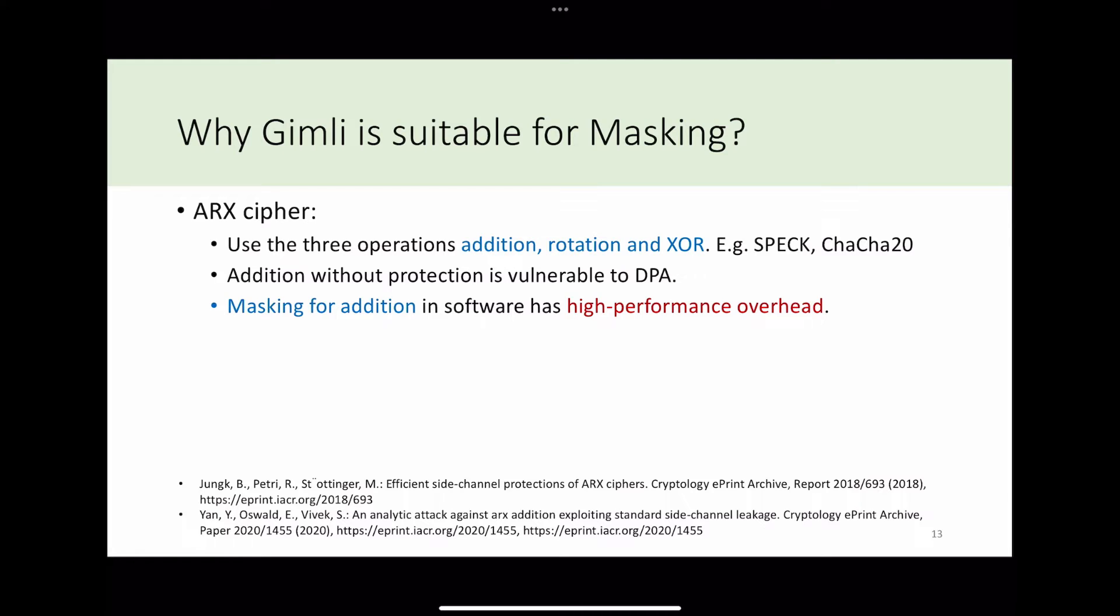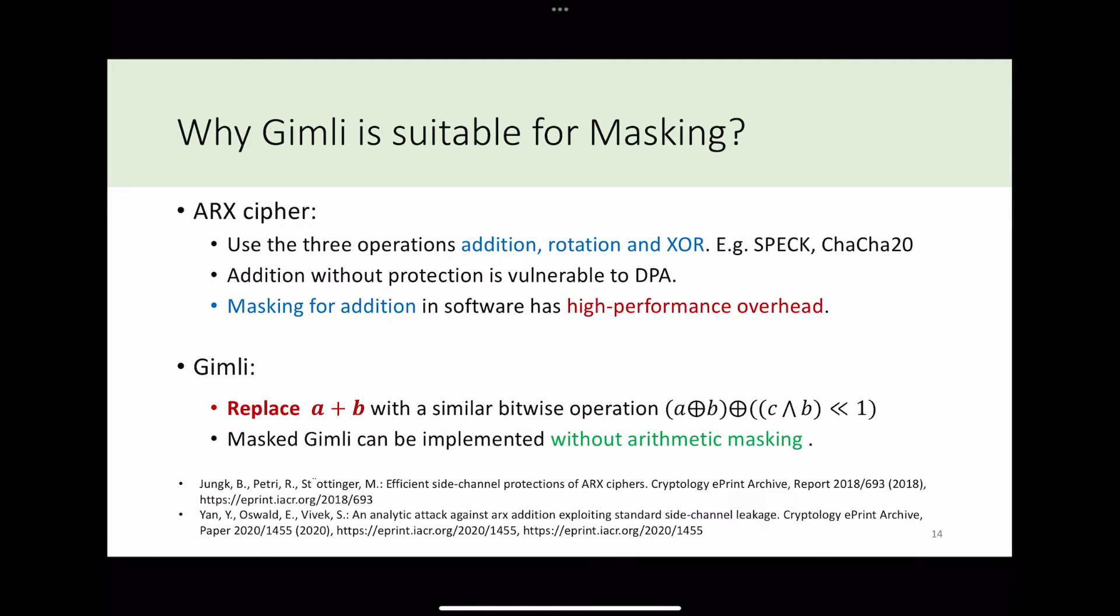After we discuss why Gimli is suitable for masking, I will introduce ARX ciphers. Their algorithm involves only three operations: modular addition, rotation, and XOR. Since addition operation is vulnerable to DPA attack, we use arithmetic masking to protect the secret value. However, the conversion between arithmetic masking and Boolean masking has very high performance overhead. However, Gimli replaces the addition by several bitwise operations. So, masking Gimli can be implemented in Boolean masking without any conversion.